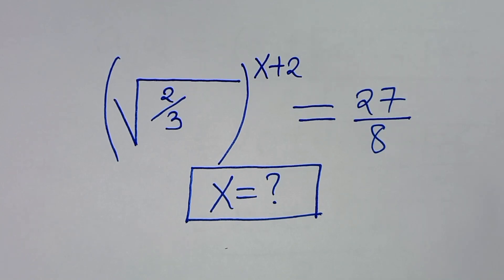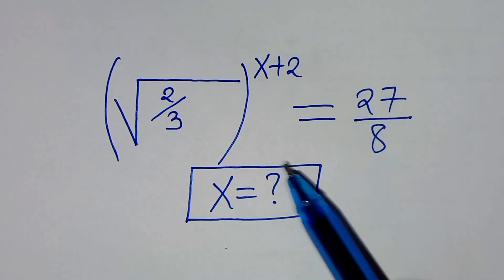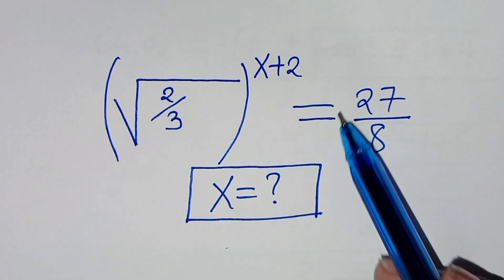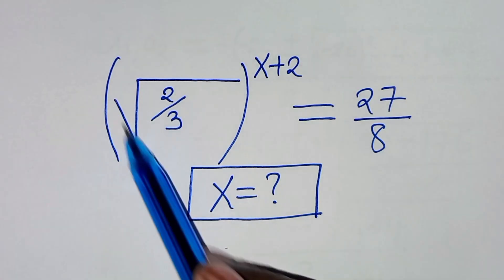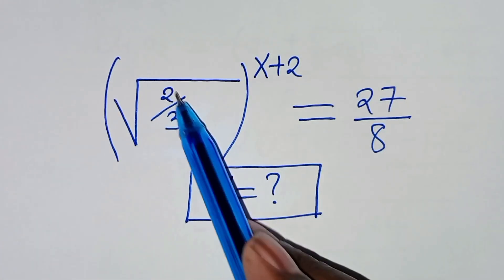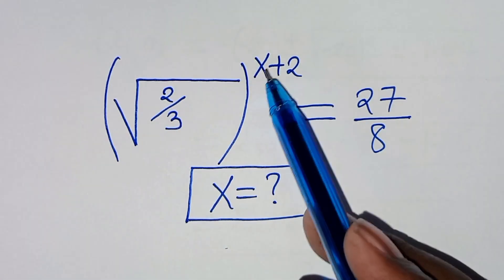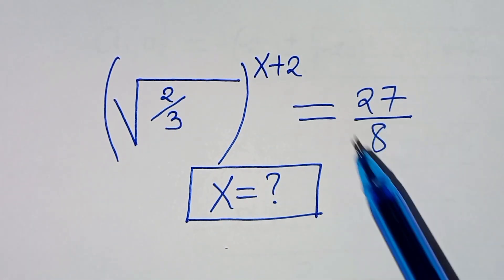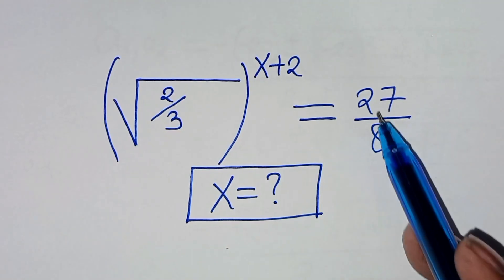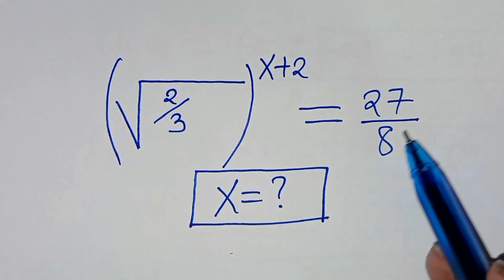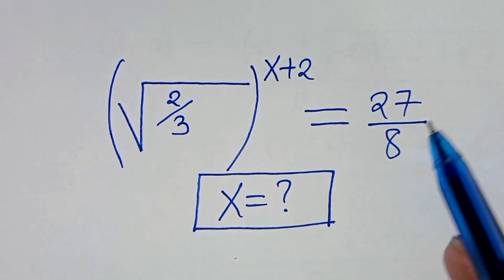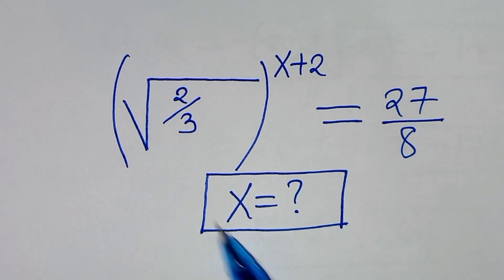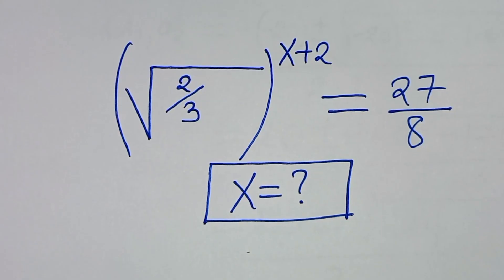Hello everyone, you're welcome to solve this nice algebra problem: the square root of 2 over 3, raised to the power of x plus 2, is equal to 27 over 8. What is the value of x?